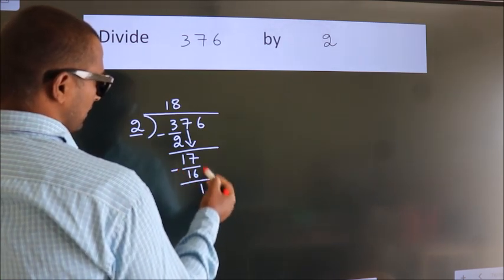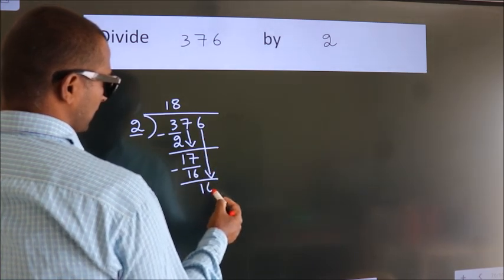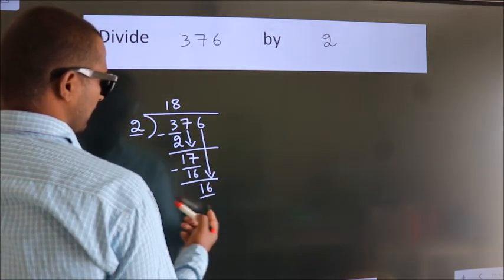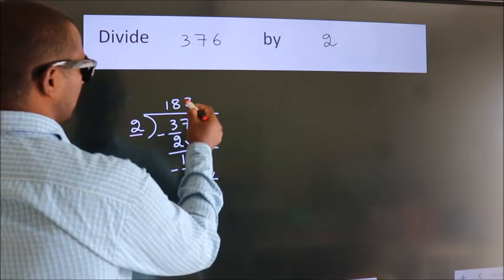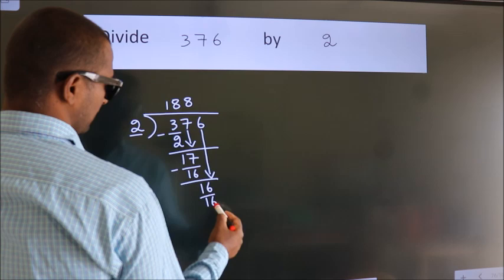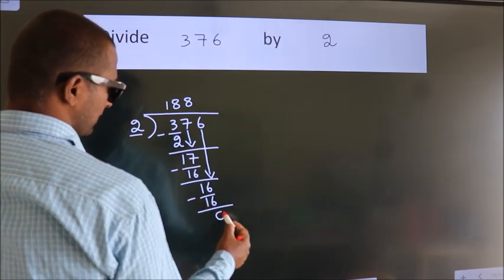After this, bring down the beside number. So 6 down. So 16. When do we get 16? In the 2 table. 2 times 8 equals 16. Now we subtract. We get 0.